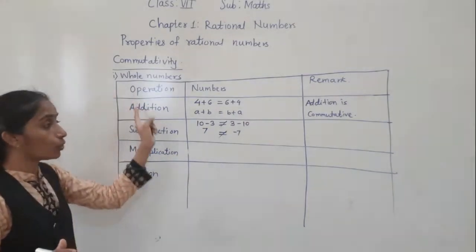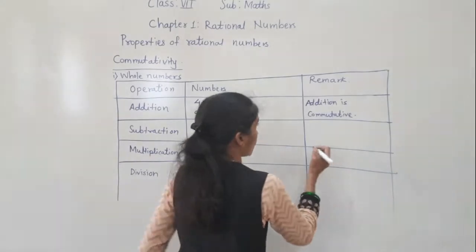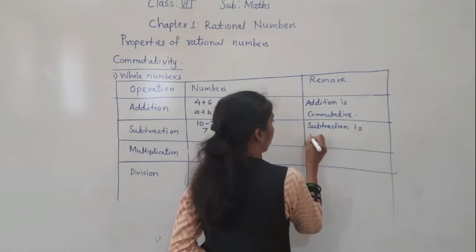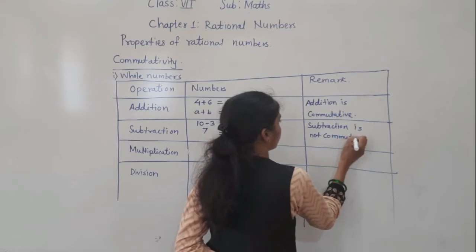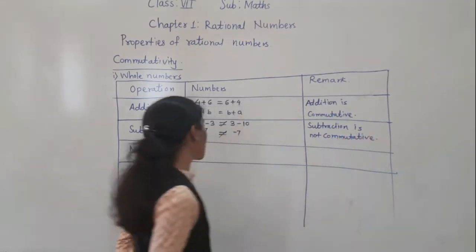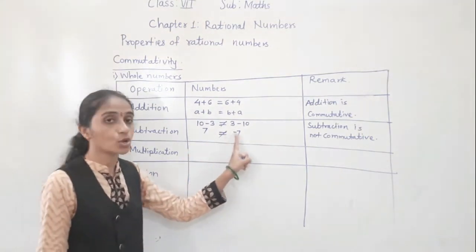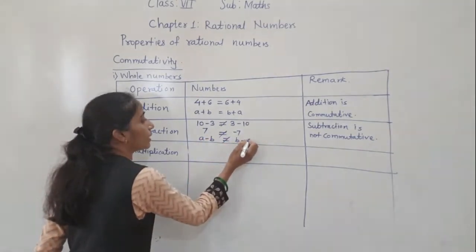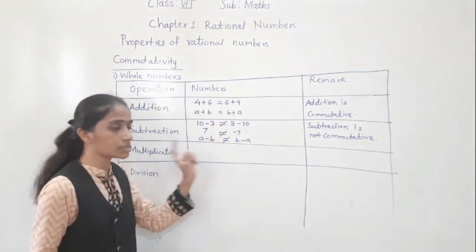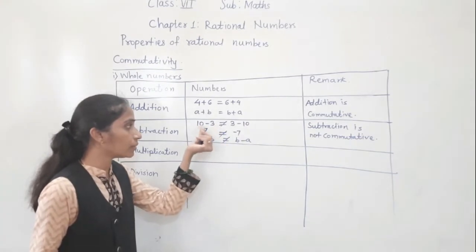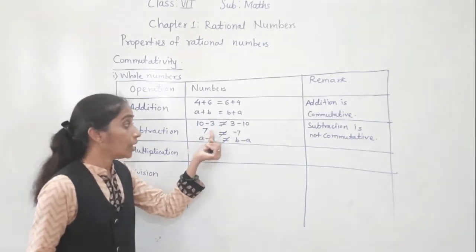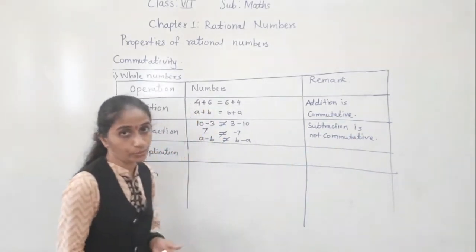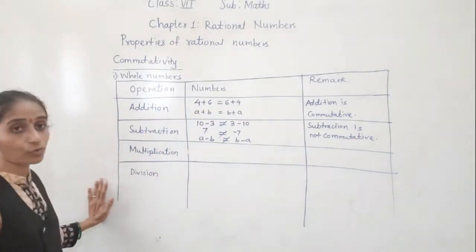So what we write here: subtraction is not commutative. A minus B is not equal to B minus A. A means 10, B means 3. A minus B gives 10 minus 3 equals 7, but B minus A gives a different answer. So subtraction is not commutative — this property does not work for subtraction.